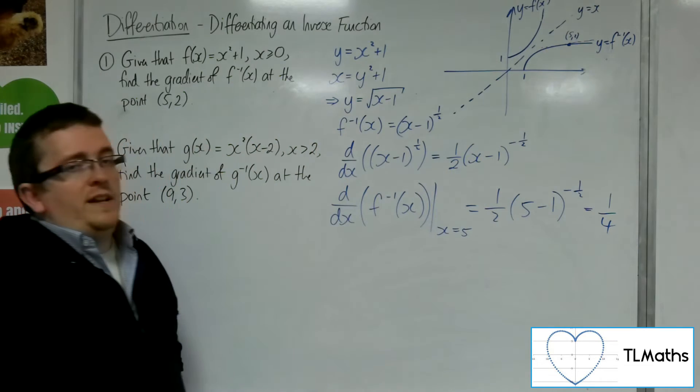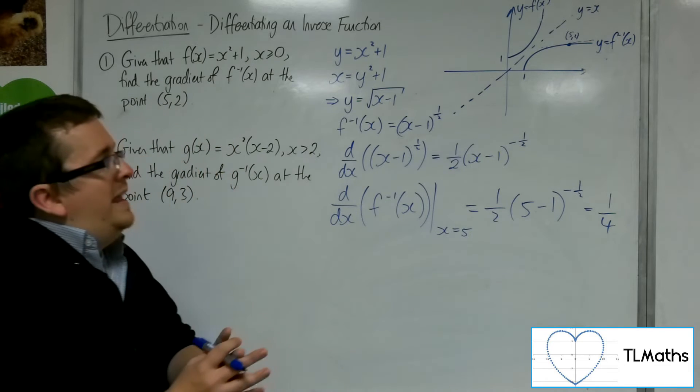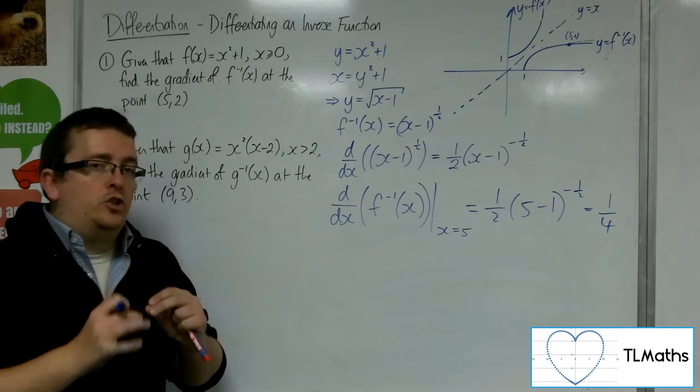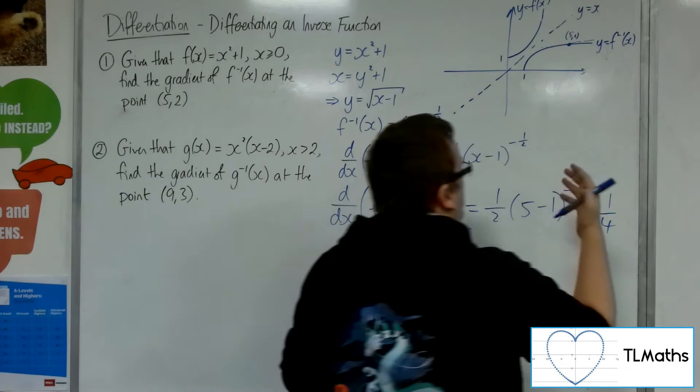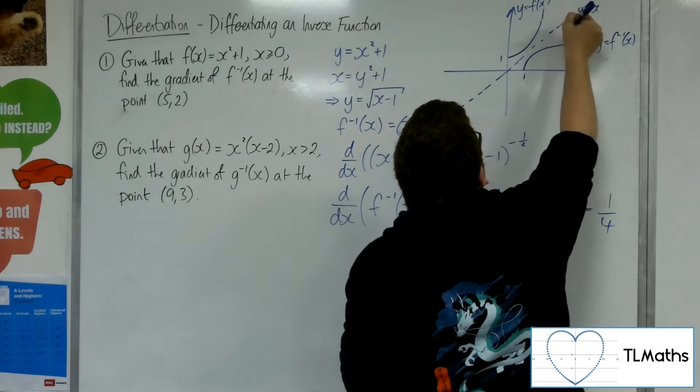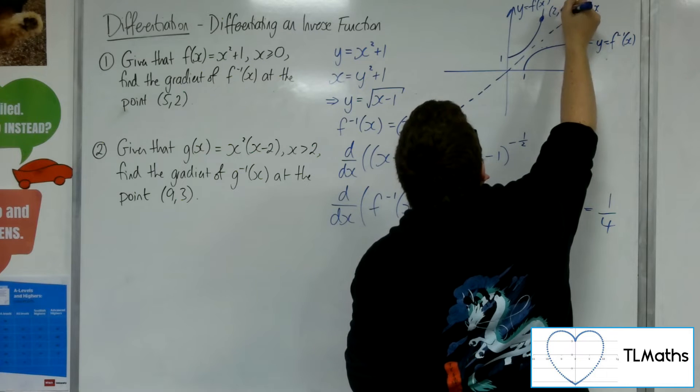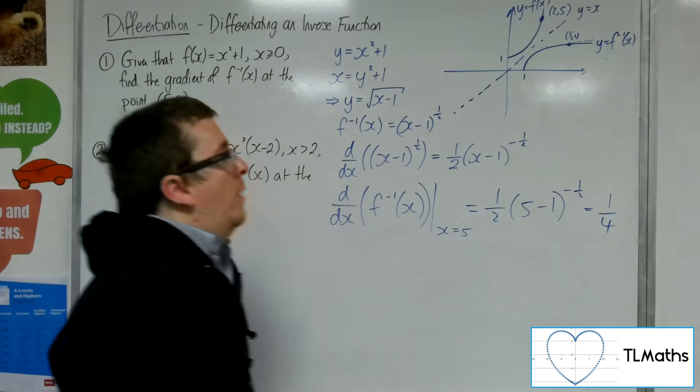So 1 quarter is the gradient of that tangent line. Now what I really want to know is, is there any connection between the gradient of the curve at 5, 2, and the gradient of y equals f(x) at the corresponding point of 2, 5, the reflected point in the line y equals x?